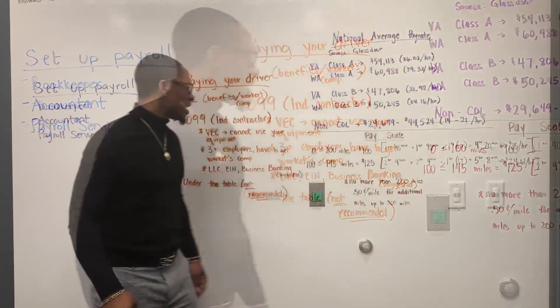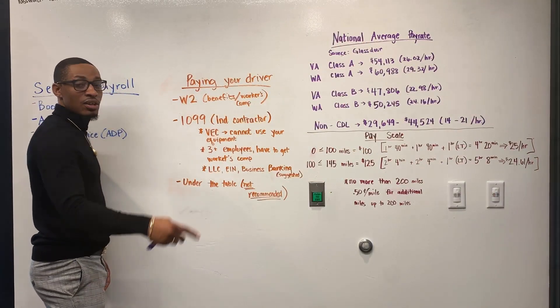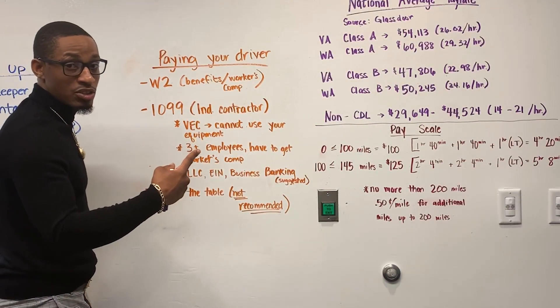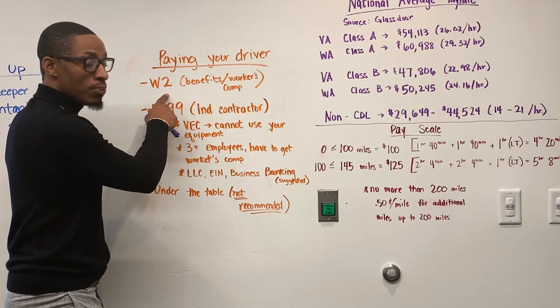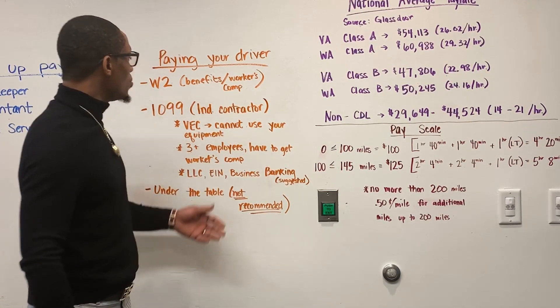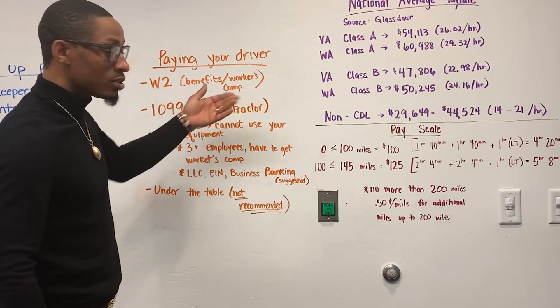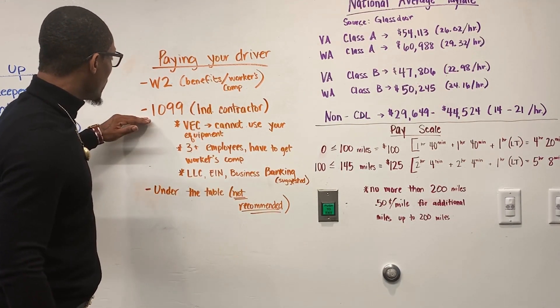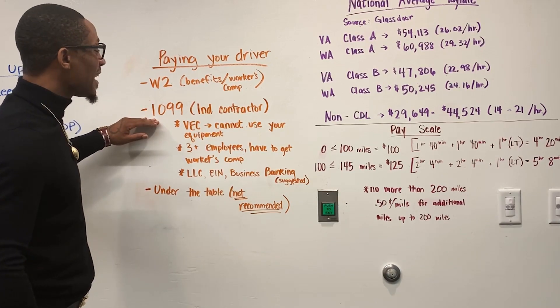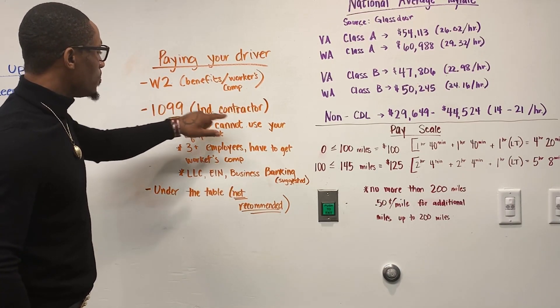Next thing you do is have to figure out how you're going to pay your driver. There's three ways to pay your driver. You have a W-2, or if you pay your driver a W-2, you will have to make sure that driver has benefits as well as you have to get workers' comp. The second way is the most popular way, which is a 1099, which is an independent contractor.